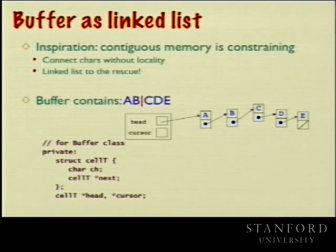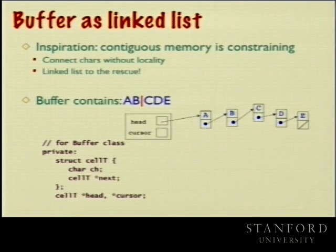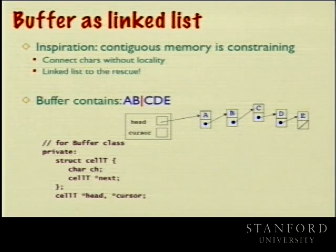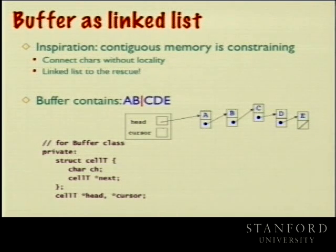We're going to implement the buffer using a linked list. If I have the characters A, B, C, D, E, I could have a linked list pointing to the head cell A, which points to B, C, D, and down to null. In the private data section I'll model a little linked list node with a character and a pointer to the next one. Then I'll keep two pointers: one to the frontmost cell, and one modeling where the cursor is within the buffer.